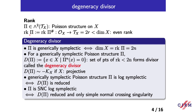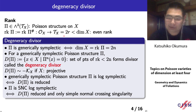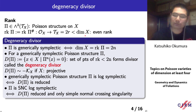Next, we recall the rank of a Poisson structure. The rank of a Poisson structure is the rank of the anchor map. This is an even number 2R, less than or equal to the dimension of X.